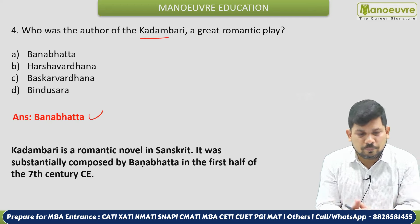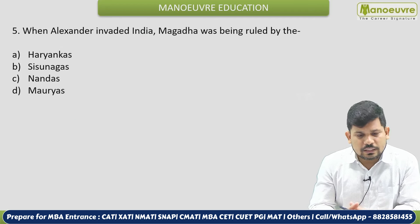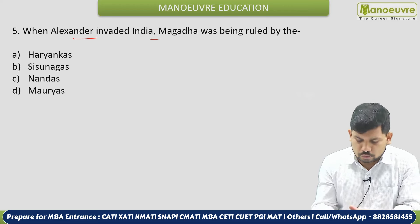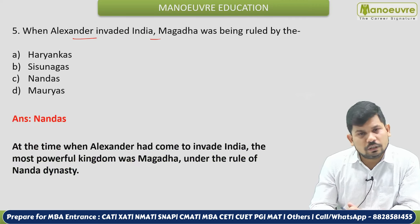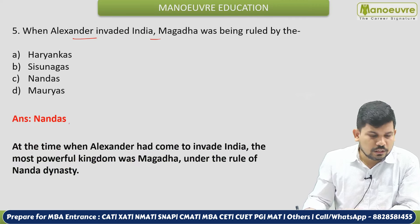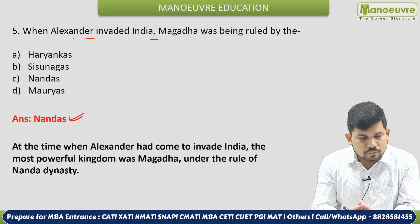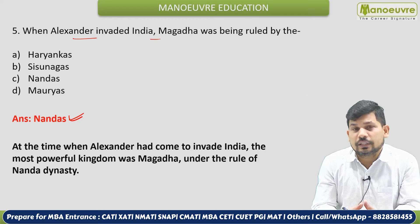Next: When Alexander invaded India, Magadha was being ruled by whom? This is from the ancient India part — selected questions from this section appear in exams. The correct answer is the Nanda Dynasty. The Nanda Dynasty's period — you should also know about Chandragupta Maurya and Chanakya, whose conflict with the Nanda king Ghananda you may have seen in serials or videos.